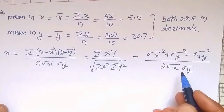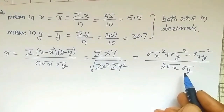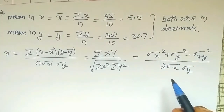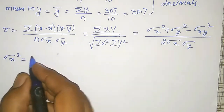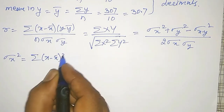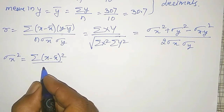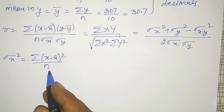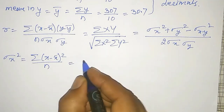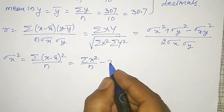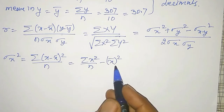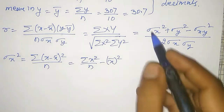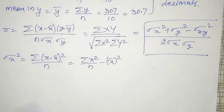To use this formula I have to find σx, σy, and their squares. σx² (variance) equals summation of (x − x-bar)² divided by n, or equivalently summation of x² divided by n minus x-bar squared. This avoids decimal subtractions, so I will use this formula.